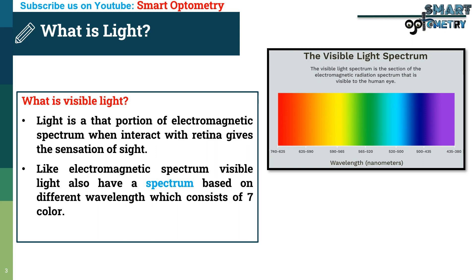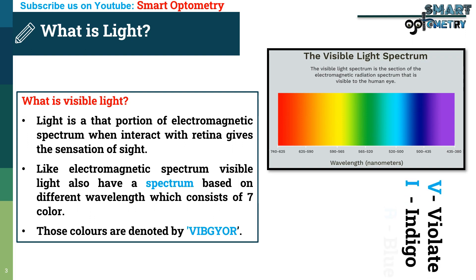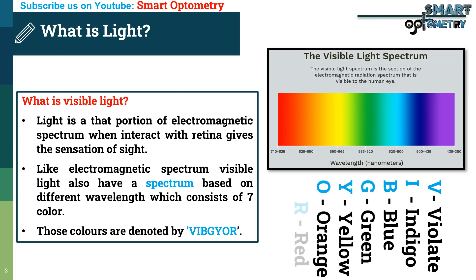Like the electromagnetic spectrum, visible light also has a spectrum based on different wavelengths, which consists of seven colors. Those colors are denoted by VIBGYOR: V for violet, I for indigo, B for blue, G for green, Y for yellow, O for orange, and R for red.